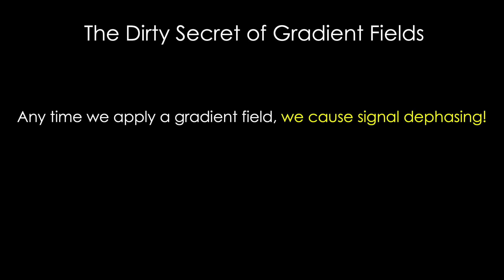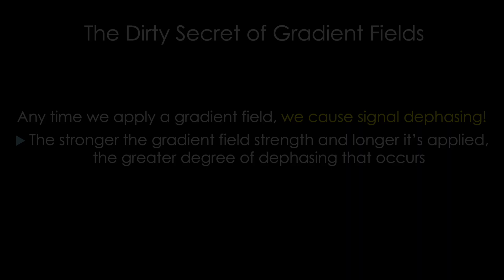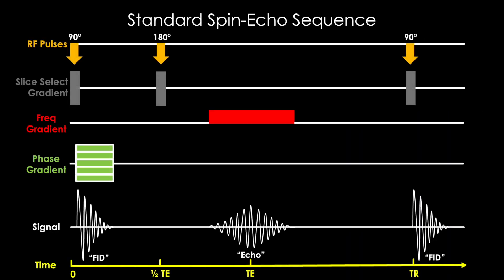So this brings us to the dirty secret of gradient fields that no one talks about. Any time we apply a gradient field, we cause signal dephasing. And the stronger the applied gradient field and longer it's applied, the greater degree of dephasing that occurs. So going back to the standard spin echo sequence, when we apply a phase encoding gradient, we decrease the signal. When we apply our frequency encoding gradient, guess what happens? We decrease our signal.